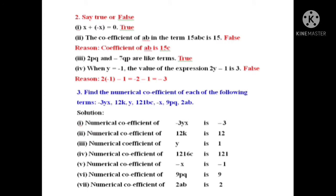Say true or false. First question: x plus minus x is equal to 0. Is this true? Definitely true. Suppose x has value 5: 5 plus minus 5 equals 5 minus 5, which is 0. So whatever value x has, the positive term and negative term cancel each other when added, giving 0. Answer: true.